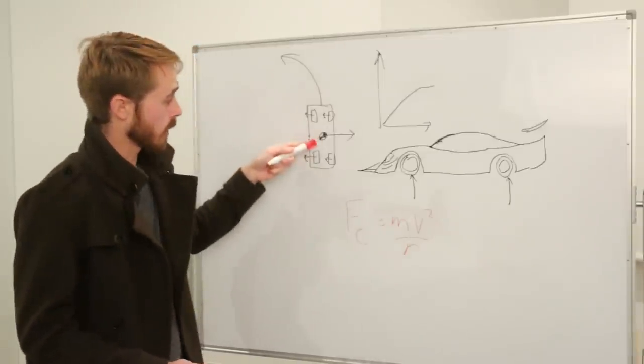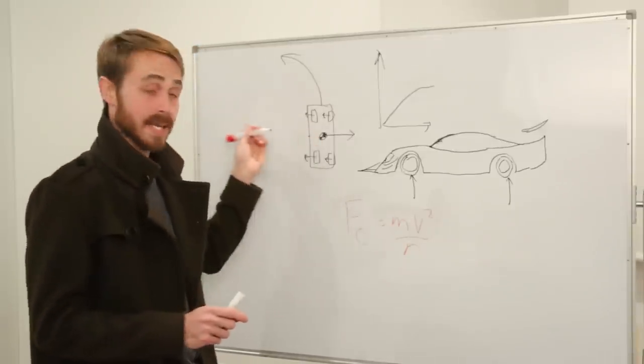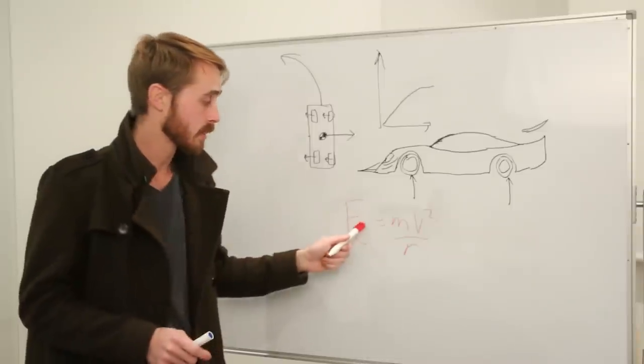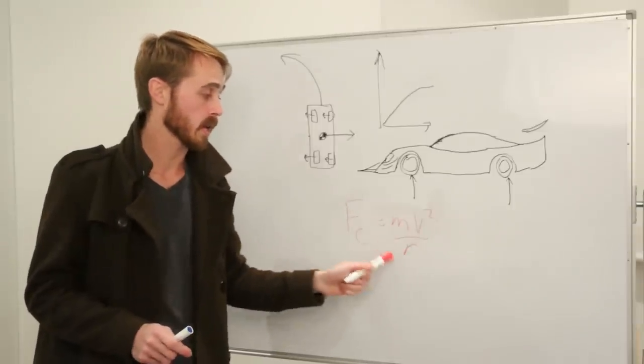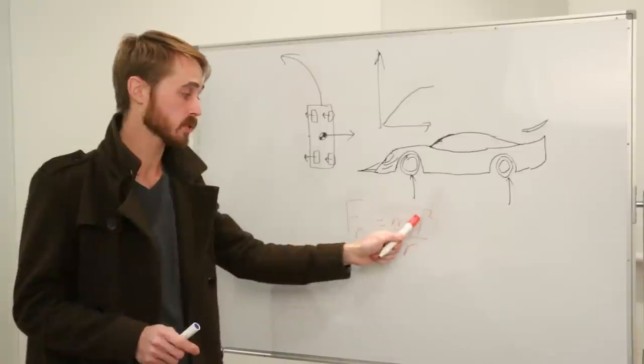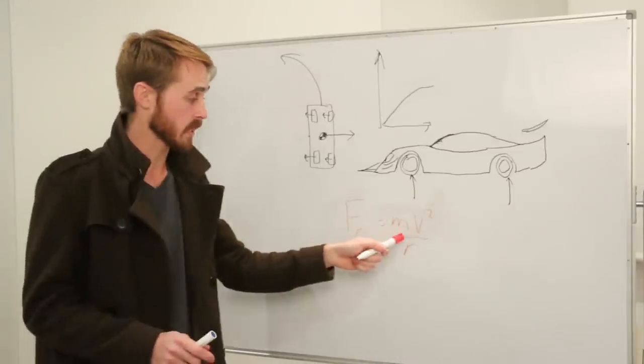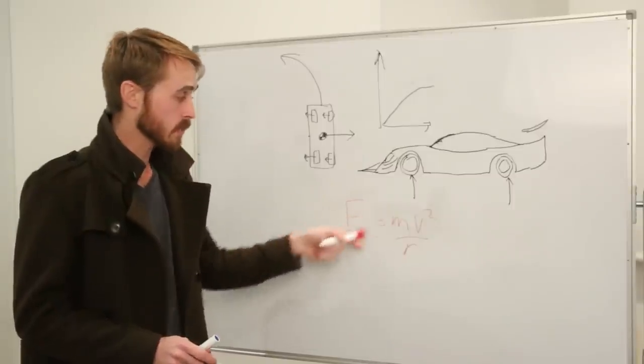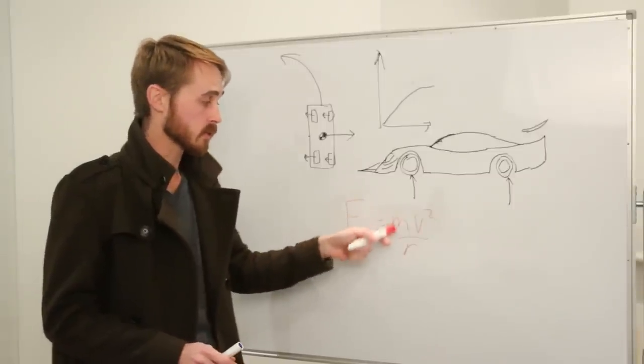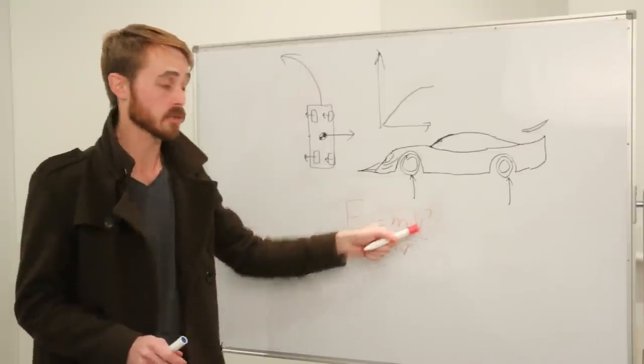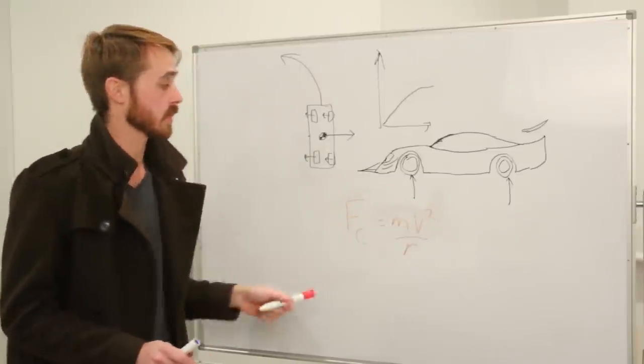Now our force in a corner, our centripetal force that we need to pull ourselves into any corner equals mv squared on r, mass times velocity squared divided by the radius of your corner. From this we can see that if we increase this force and mass is constant and the radius of the corner is constant, our velocity through the corner will increase.